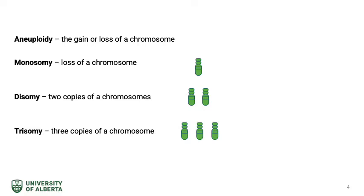Trisomy is a condition in which there are three copies of a chromosome. A fetus with a trisomy has 47 chromosomes.